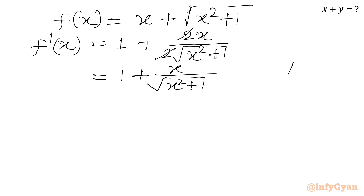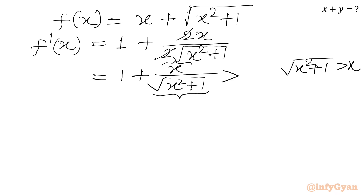Since square root of (x squared plus 1) is always greater than x, the denominator is bigger than the numerator, so we get a fractional value — whether x is positive or negative. Therefore f prime(x) is always greater than 0, meaning f(x) is a strictly monotonic increasing function.